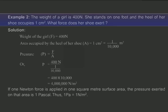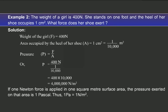Now, look at the other example. The question says: the weight of a girl is 400 Newton. She stands on one foot, and the heel of her shoe occupies 1 centimeter square. What pressure does her shoe exert?